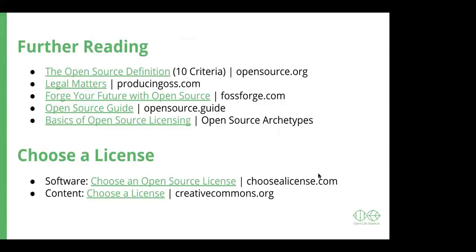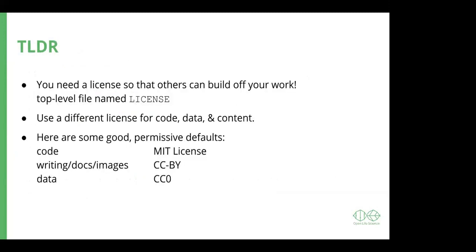To sum up: if you're building an open project and you want others to build off of and use your work, you need a license — a top-level file named LICENSE. If you have code, data, and different content, use different licenses for those types. Good permissive defaults are: the MIT license for code, the CC BY license for writing, documents, or images, and the CC0 license for data, which effectively puts it into the public domain.